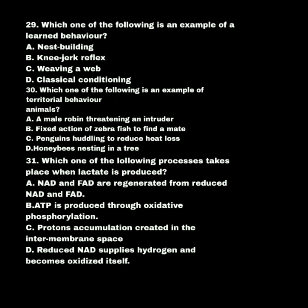Which one of the following process takes place when lactate is produced? A. NAD is regenerated from reduced NAD. B. ATP is produced via oxidative phosphorylation. C. Protons accumulate in the inter-membrane space. D. Reduced NAD supplies hydrogen and oxidizes itself. The answer is D: reduced NAD supplies hydrogen and becomes oxidized itself when lactate is produced.